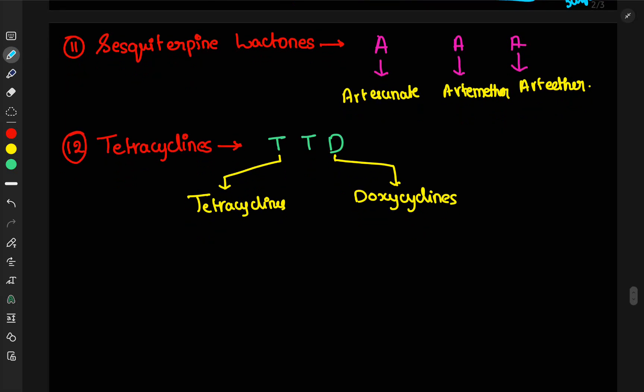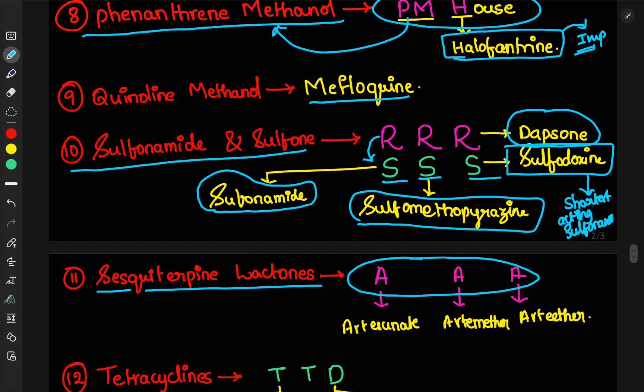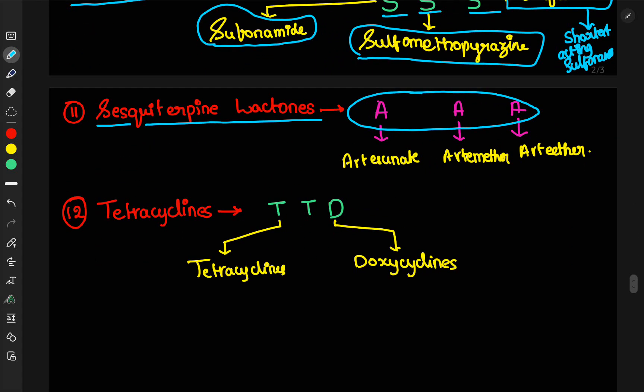Then, eleventh one, sesquiterpene lactones. Here, you remember the three A's. A, A, A. Before you remember triple S, then triple A. Artesunate, artemether, arteether. These are all artemisinin derivatives. They are produced from a Chinese herb. These are all derivatives of artemisinin.